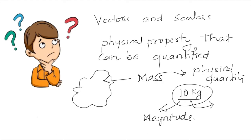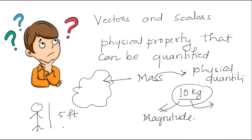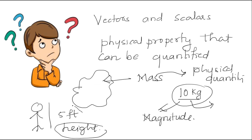In the same way, we say my height is 5 feet. When we say my height is 5 feet, what is the physical quantity? The physical quantity is height. And what is the magnitude of the height? 5 feet. So what does magnitude tell us? Magnitude tells us how much of the physical quantity there is.